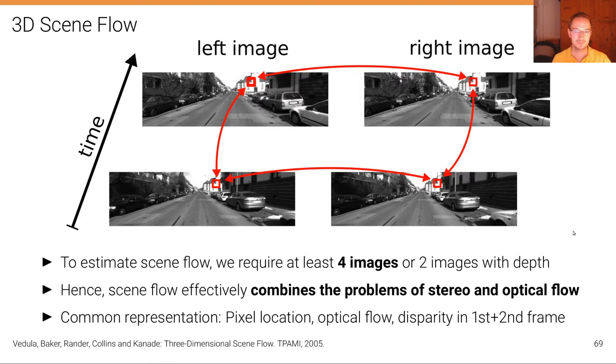But this here is really the common setup in self-driving, where we have a stereo camera. And now we want to find correspondences across all of these four images. You can see this little corner of the house rooftop that is now found in all of these four images.